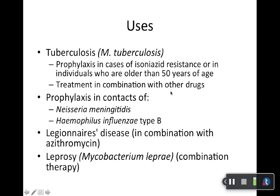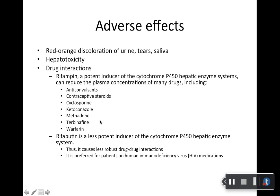Uses for rifampin: TB in that four-drug combination the CDC recommends. Also interesting — it can be used with azithromycin for Legionnaires' disease, with other drugs for leprosy, and has some prophylactic uses as well.